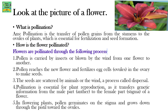What is pollination? Pollination is the transfer of pollen grains from the stamen — that is the male part — to the ovules of a plant present in the female part, which is essential for fertilization and seed formation.